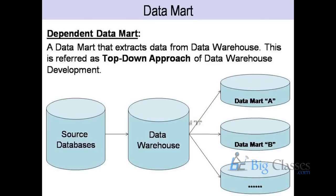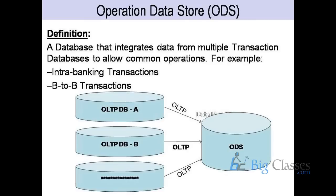In the data warehouse we don't keep transaction data — mostly we keep summary data. Some clients ask whether it is possible to provide transaction-level reporting from the warehouse database. They want to switch complete operational reporting from the OLTP database to the warehouse. But warehouse is designed to keep summarized data, not detailed data. If we start keeping detailed data alongside summarized data, the warehouse becomes very large, sometimes unmanageable, and performance becomes very slow.